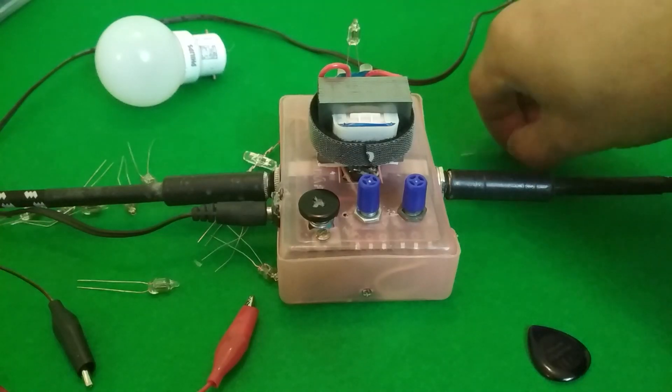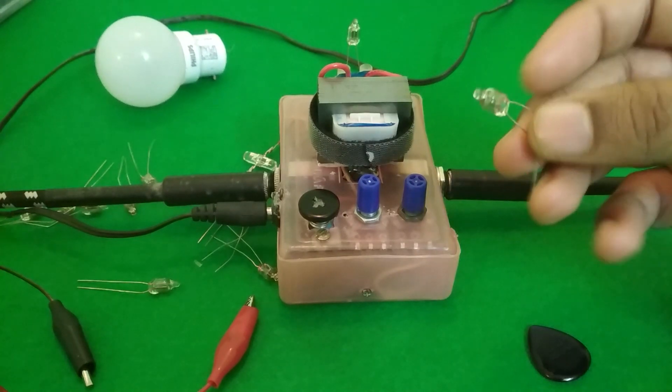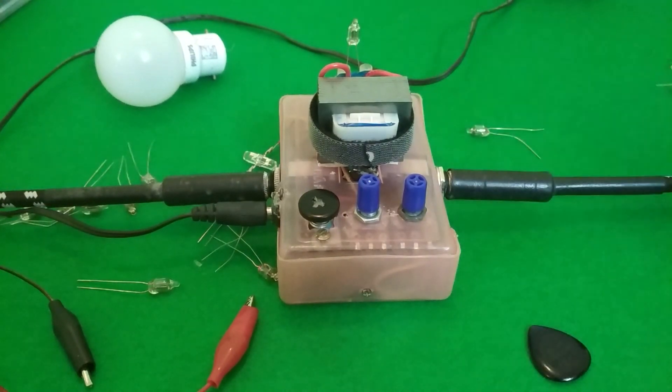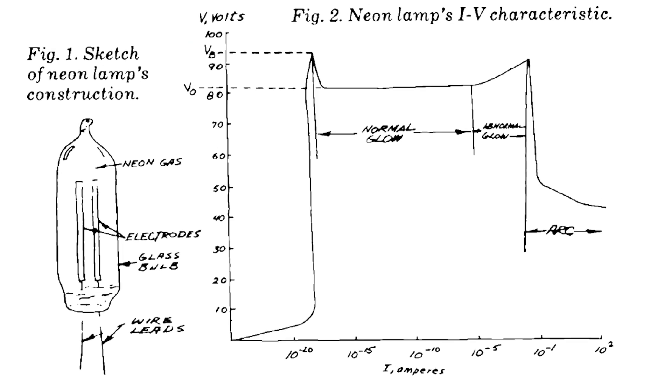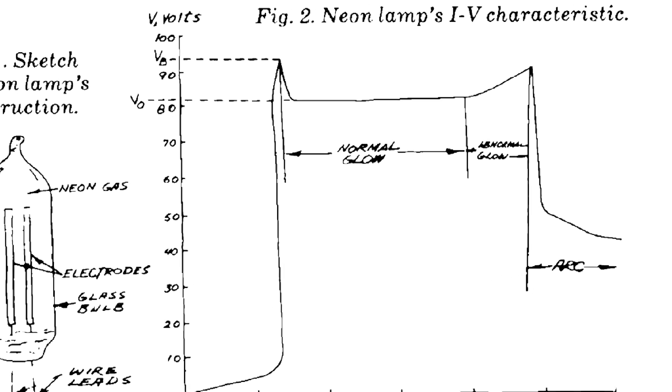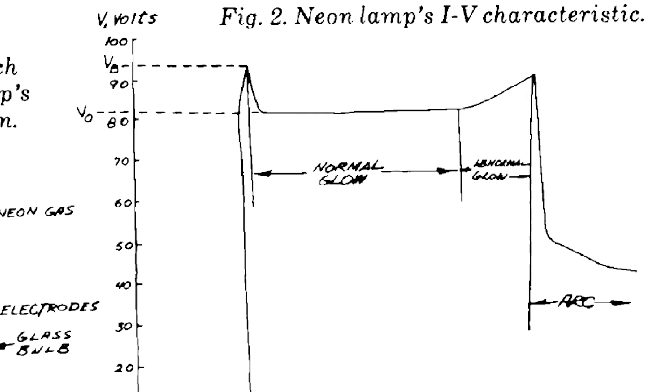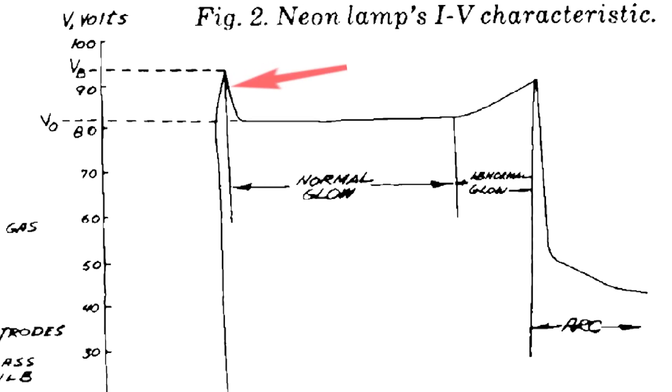One of the really cool things about using a gas discharge tube as a distortion element is that it is actually, relatively speaking, easier to maintain conduction through a gas than to actually start the conduction. So these neon lamps have a big negative resistance region where an increase in current after it starts conducting actually corresponds to a decrease in voltage.